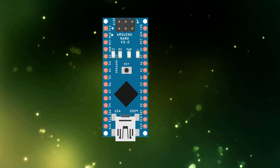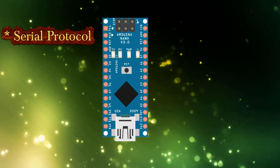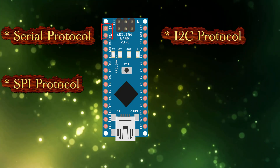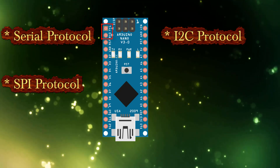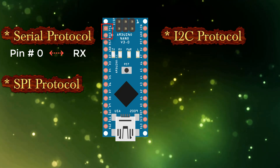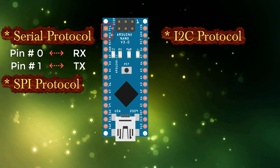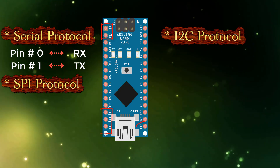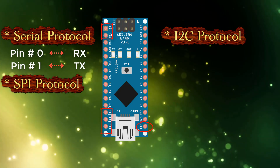Arduino Nano can perform 3 types of communication protocols which are Serial, SPI, and I2C. Pin number 0 and 1 are used for serial communication, where pin number 0 is Rx used to receive data, and pin number 1 is Tx and we transmit serial data via this pin. The pins used for SPI communication are pin number 10, 11, 12, and 13.